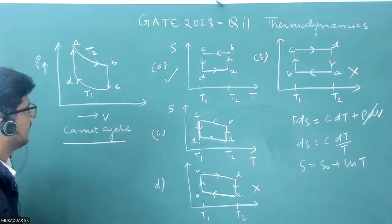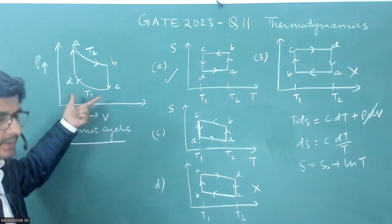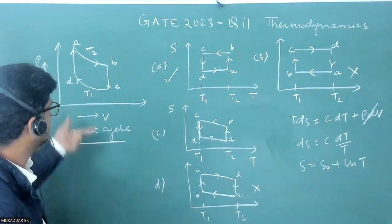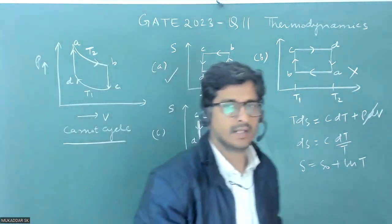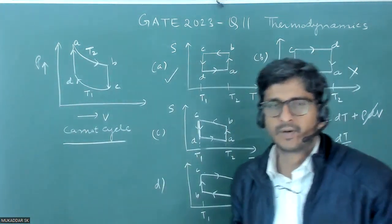So that's why I think that there was a mistake in the figure, otherwise if it is Carnot cycle this is its representation in S and T diagram. Okay thank you.